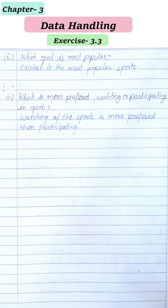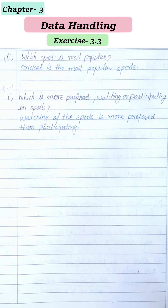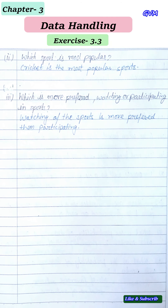This was Exercise 3.3. Questions 2, 4, and 6 you have to do by yourself. For question 4, take a scale of 10, and for question 6 the data is already given in a table at the beginning of the chapter. Please note down all the questions in your notebook and practice them well. See you in the next exercise — keep practicing and keep learning. Thank you!